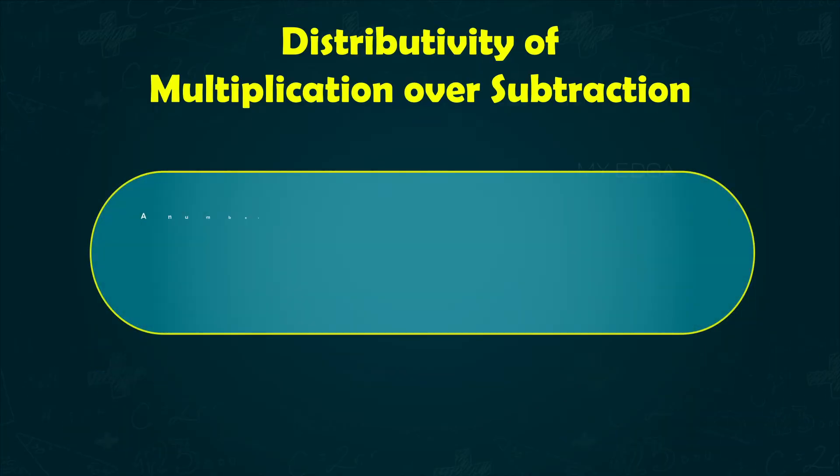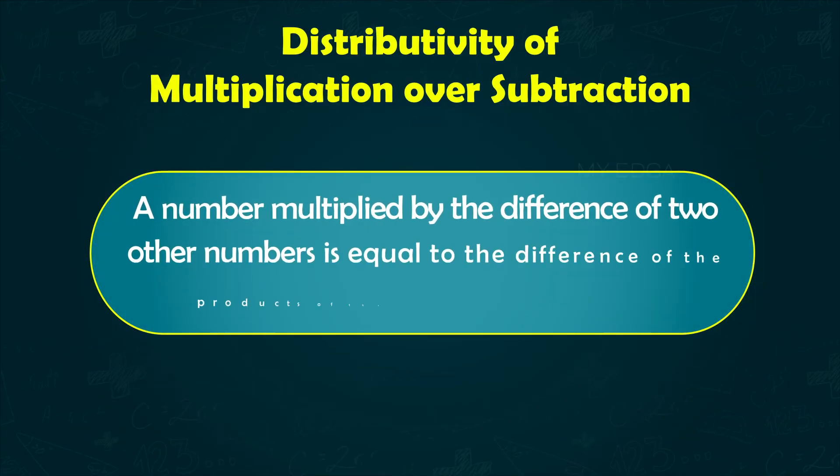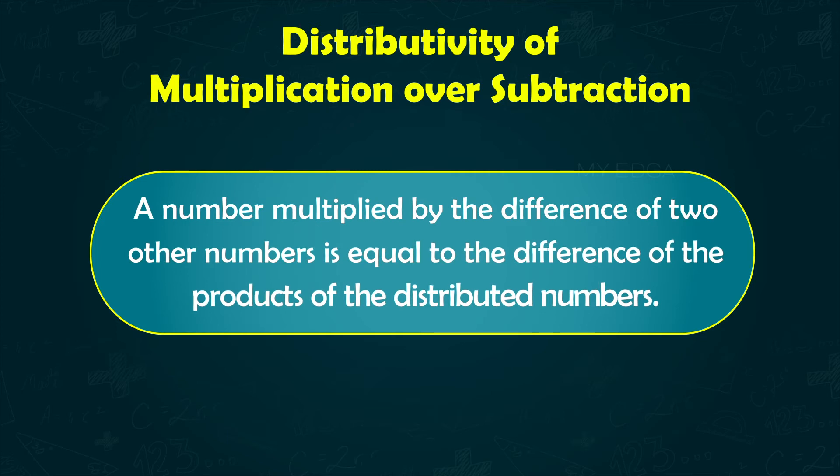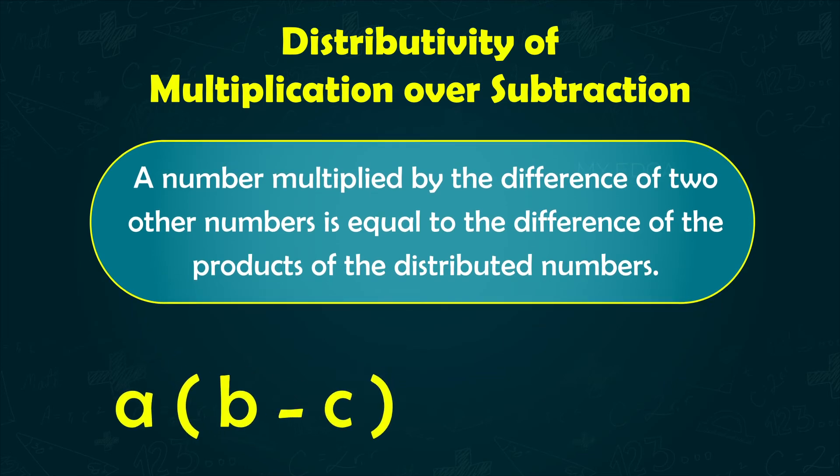This means that a number multiplied by the difference of two other numbers is equal to the difference of the products of the distributed numbers. That is, a into (b minus c) equals a into b minus a into c.